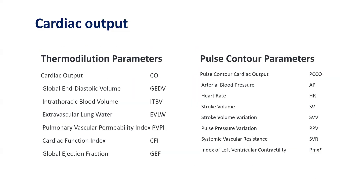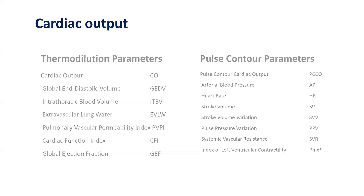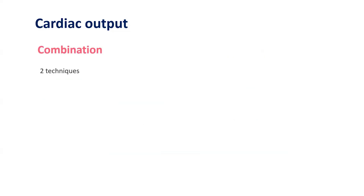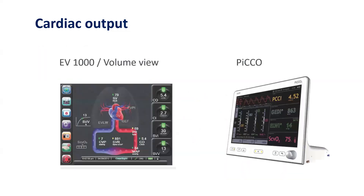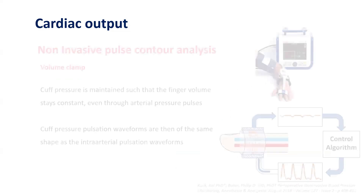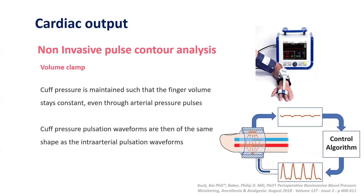Different parameters can be measured by these two techniques, and when thermodilution and pulse contour analysis are combined, better results are obtained. Most modern cardiac output monitoring devices — including the VolumeView and PiCCO — combine thermodilution and pulse contour analysis. Non-invasive pulse contour analysis using volume clamp is also being explored, where cuff pressure is maintained so that finger volume stays constant through the arterial pulse, and the cuff pressure pulsation waveforms match intra-arterial pulsation waveforms.